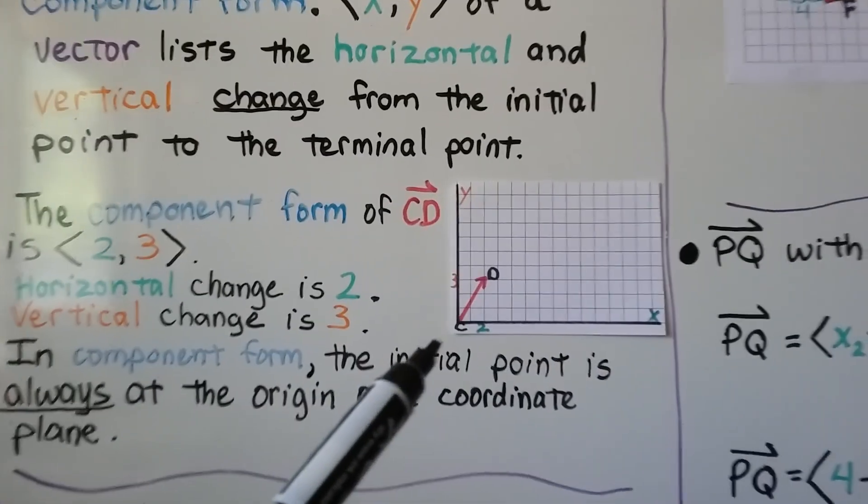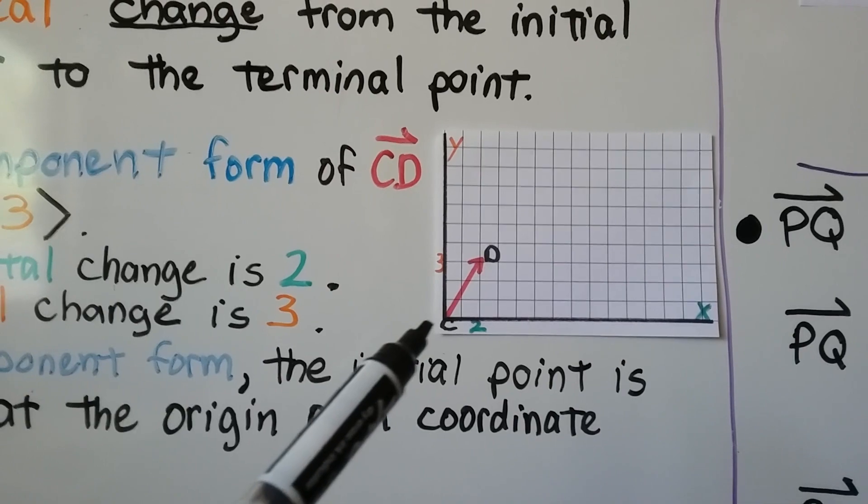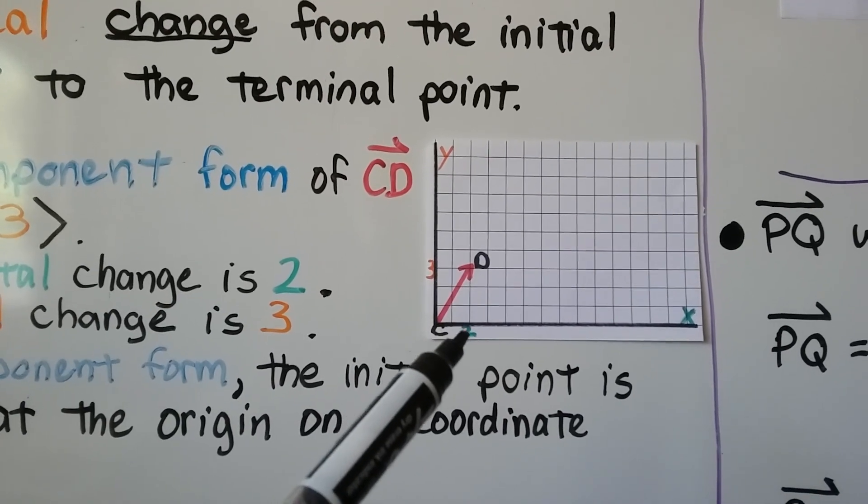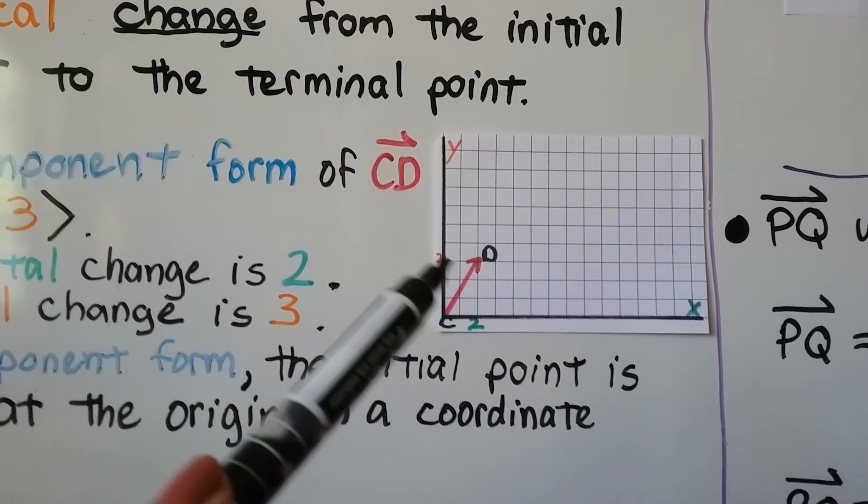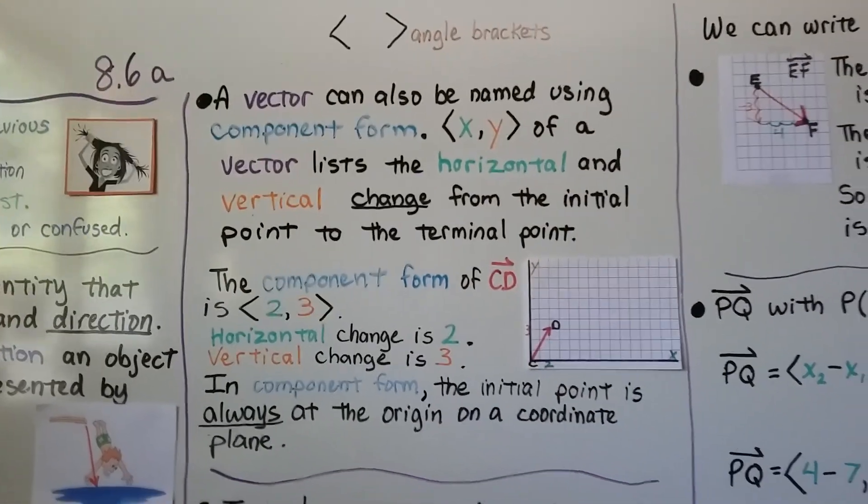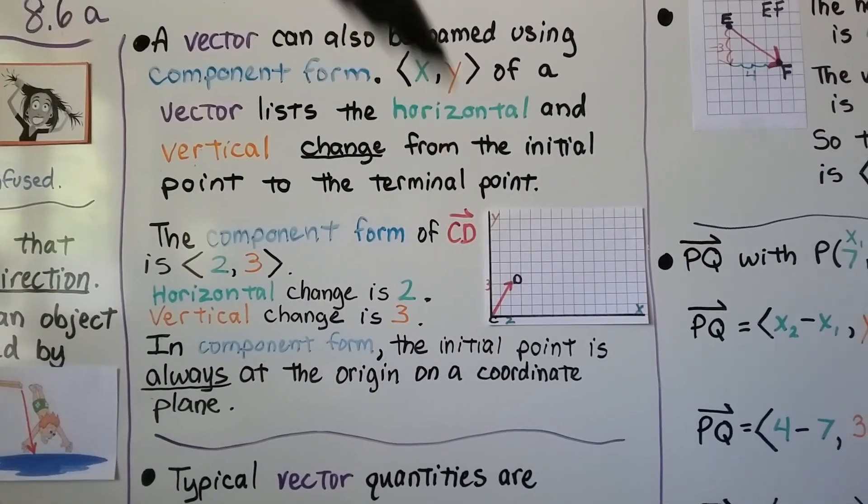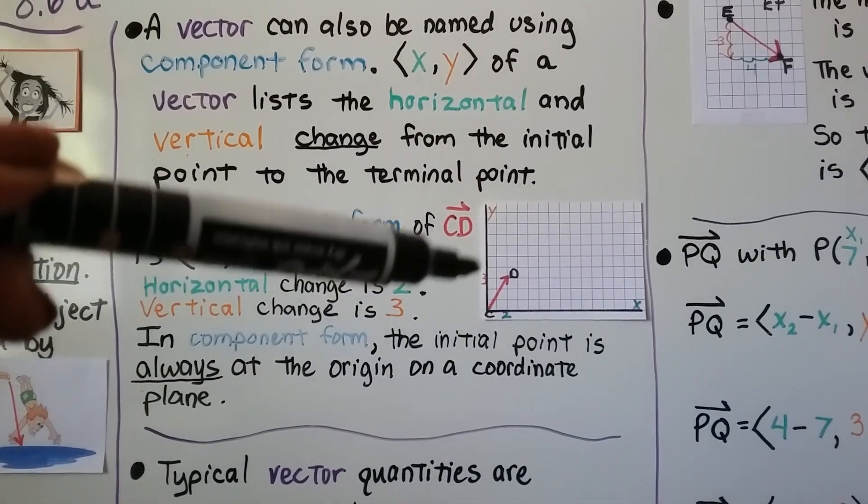And XY of a vector lists the horizontal and vertical change from the initial point to the terminal point. So if you take a look at this, we've got this vector CD right here. And we can see there's a 2 here and there's a 3 here. So the component form of vector CD is 2, 3. The horizontal change is 2, and the vertical change is 3.